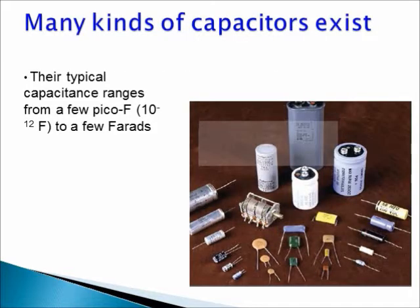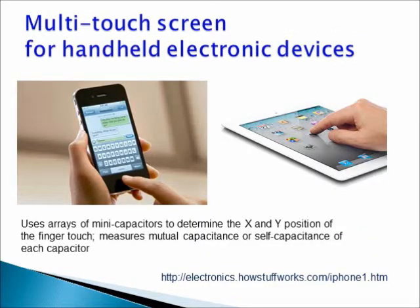Capacitors come in many kinds and sizes. Their typical capacitance ranges from a few picofarads to a few farads. The touch screen of a handheld electronic device such as an iPhone is in fact a very sophisticated array of mini-capacitors that determine the X and Y position of each finger touch by measuring mutual capacitance or self-capacitance of each mini-capacitor.